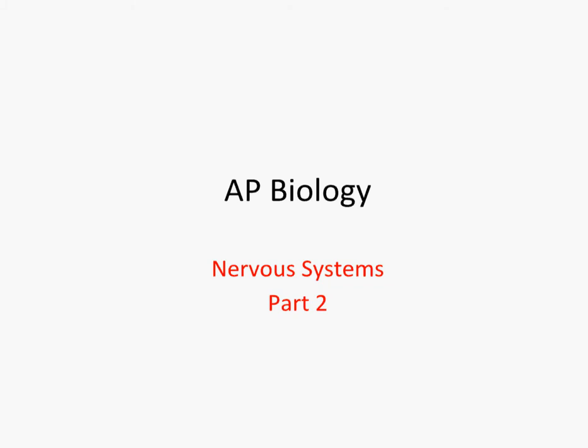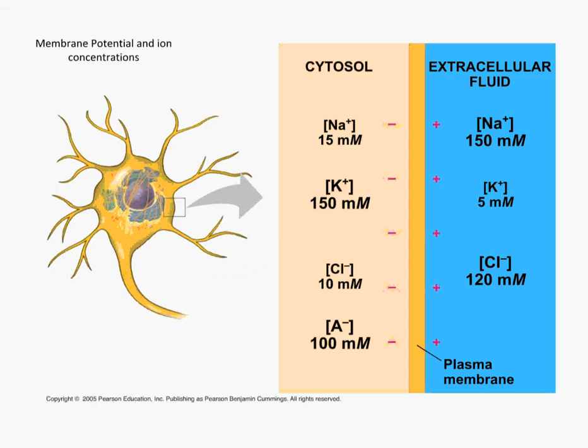This video is part two of the nervous system and it will be looking at how the nerve impulse is propagated down the length of the nerve. This shows the idea of membrane potential — understand those two words: membrane potential means the cell has the potential to do something.